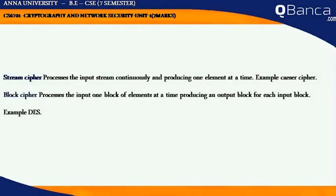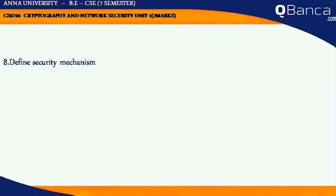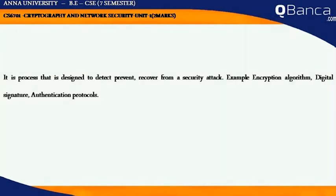Stream Cipher processes the input stream continuously, producing one element at a time. Example: Caesar Cipher. Block Cipher processes the input one block of elements at a time, producing an output block for each input block. Example: DES.